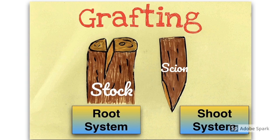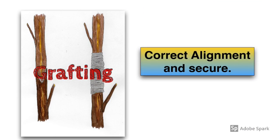The plant with the desirable shoot system — good flowers or good-tasting fruit — has a section cut away known as the scion. The scion is positioned into the stock, and to ensure the stock accepts the scion, the vascular cambium, a particular type of tissue, must be aligned well in both plants. When positioned, they are secured with tape or wire and should grow normally.